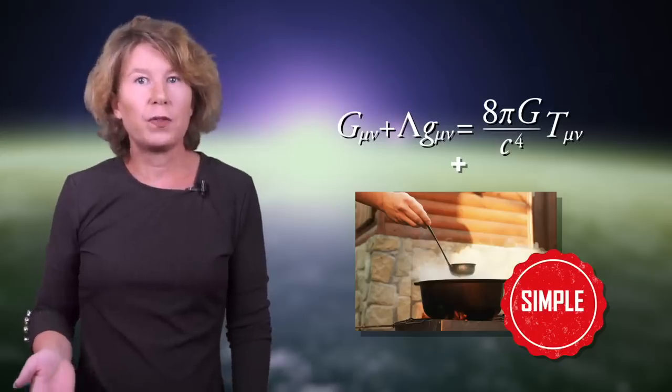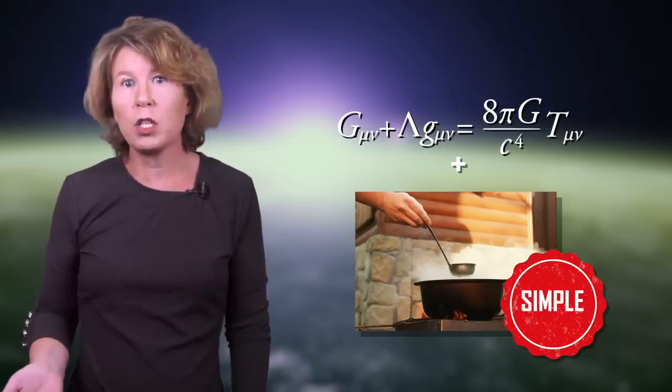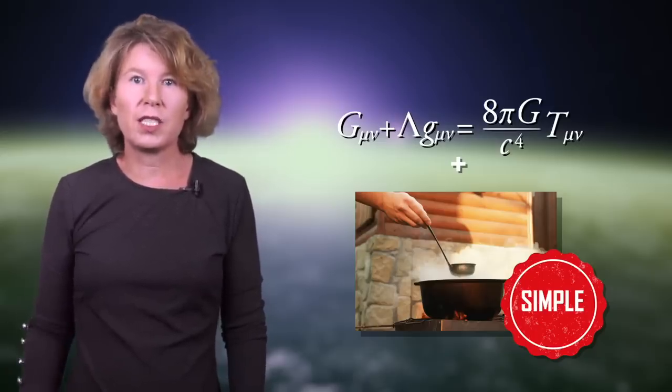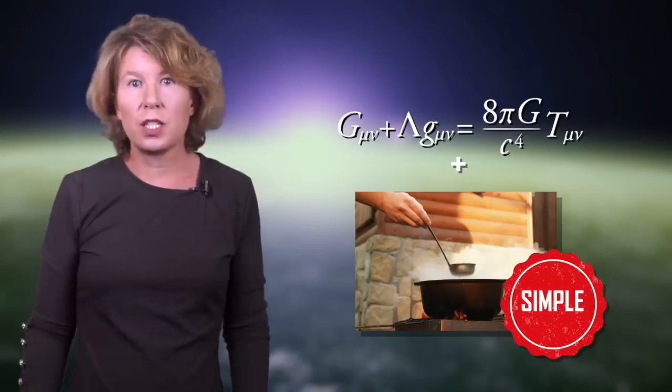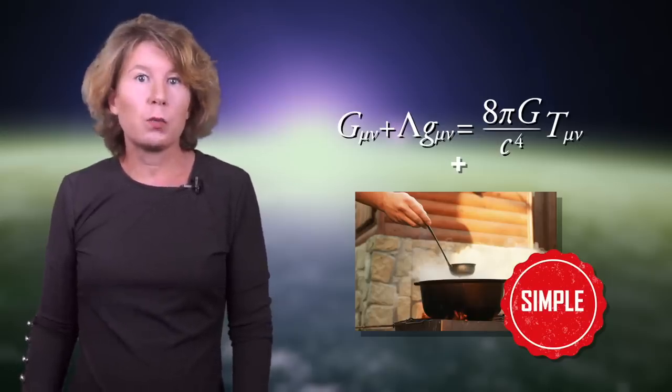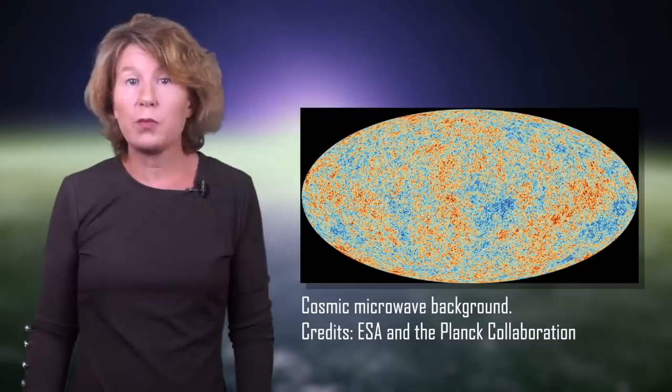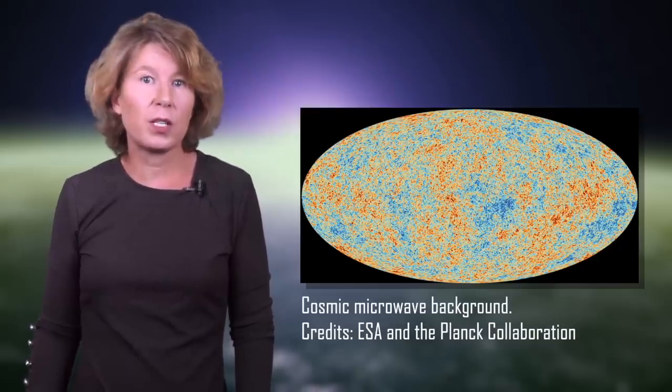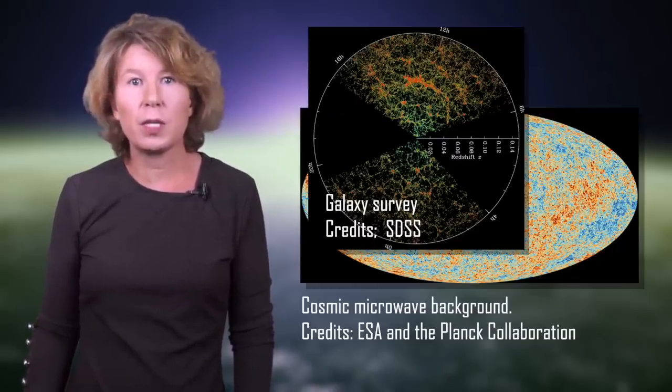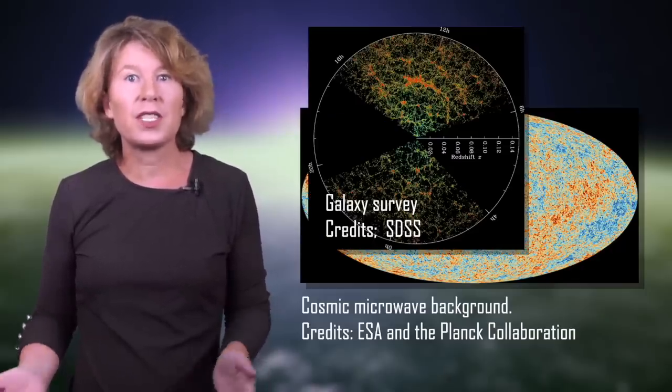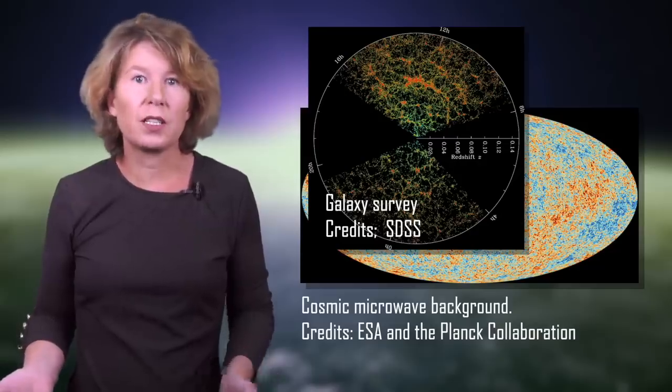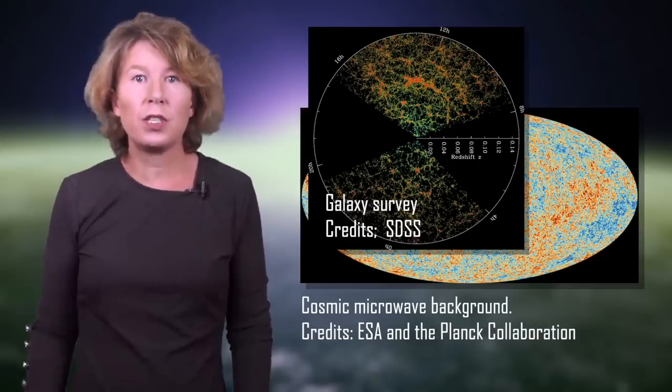The simplest explanation that we have found is the standard model for cosmology, which is also called lambda CDM, and it's based on Einstein's equations. This model explains for example how our observations of the cosmic microwave background fits together with our observations of galactic filaments. They came out of the same initial distribution of matter, the alphabet soup of the early universe.